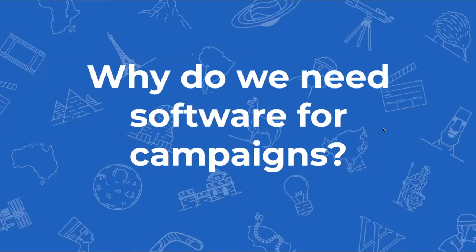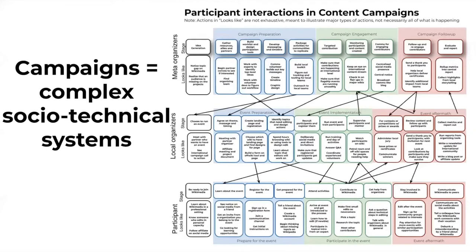So why do we need software for campaigns? Campaigns are complex. We interact at multiple different layers — at the international level, the local level, the participant level — and like other movements and social communities, it's really important that we have tools that connect these different levels and make it easier to coordinate. There are so many people involved in campaigns. Wikipedia pages wanting photos had over a thousand people involved this last round, and right now coordination is running on a very complex mix of on and off wiki tools, social systems, and coordination.